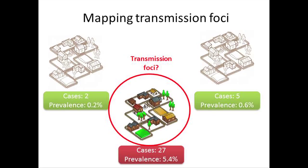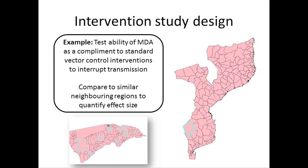Combining all of that data together you can get a map of incidence. For mapping transmission foci, if you have three villages and look at cases reported to health facilities and prevalence surveys, the village in the middle may come out as the transmission focus because it has a much higher number of cases and higher prevalence.